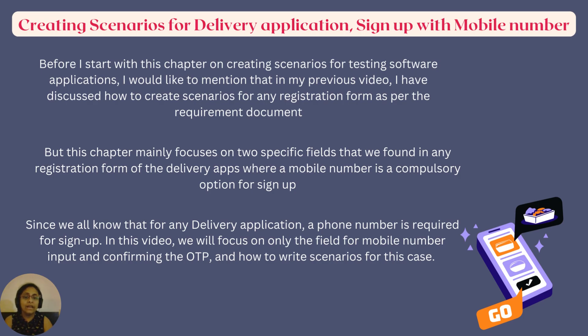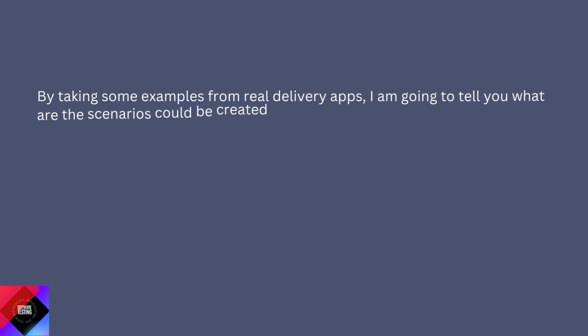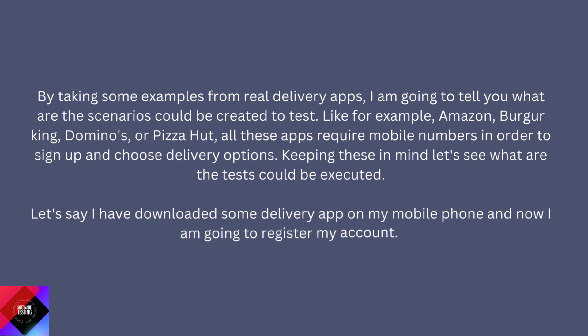I will give you some idea of how to create scenarios and apply them in real-time testing of the application. By taking a few examples from real delivery apps, I am going to tell you what other scenarios could be created to test — like Amazon, Burger King, Domino's, or Pizza Hut. All these apps require mobile numbers in order to sign up and choose delivery options. Keeping these in mind, let's see what other tests could be executed.